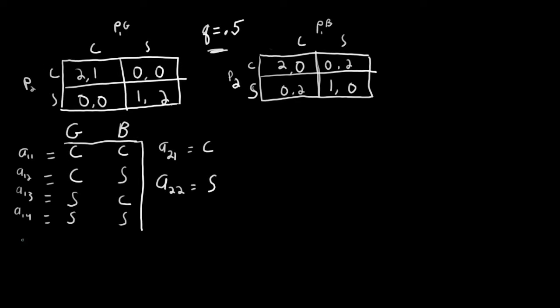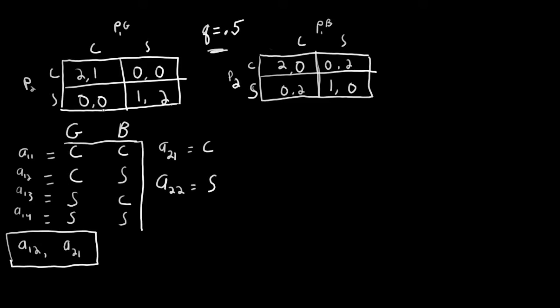Now I want to look at a particular profile: A1-2, A2-1. A2-1 is Player 2's strategy that says go to the concert. Because Player 2 only has one type — he always is the type that wants to meet up — his strategy just indicates what he does. He doesn't have to indicate what he would do for different types, because Player 2 only has one possible type. We want to look at this profile and see if it is a Nash Equilibrium, meaning we check if any player has an incentive to deviate.